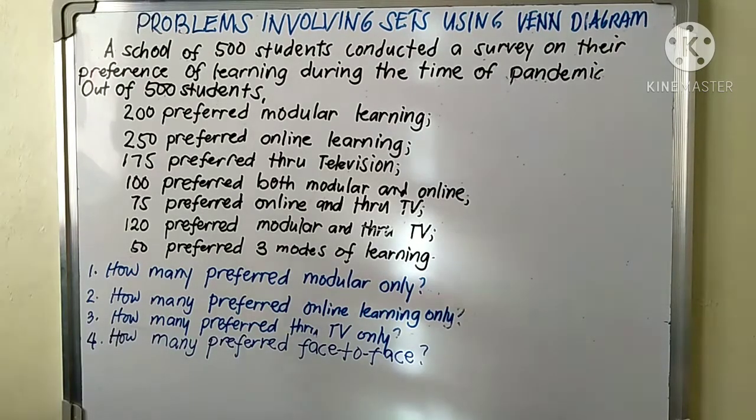Hi there, welcome back to this channel. I am your teacher, Sir Franco. Last time I talked about problem solving on sets using a Venn diagram, but this time I will continue with the second part. The first part used a Venn diagram with two circles only, but this time I will be using three circles. Please stay with me so you'll be able to solve this kind of problem when you go to your classrooms.